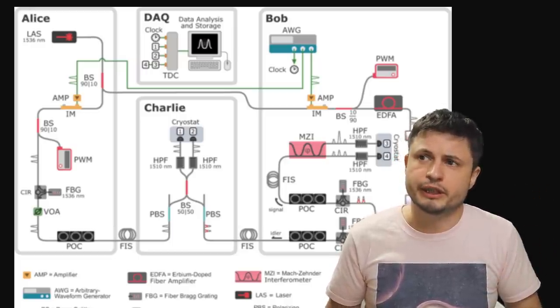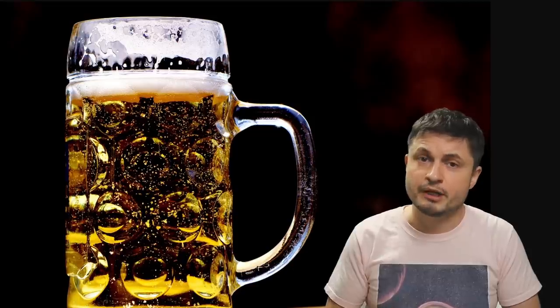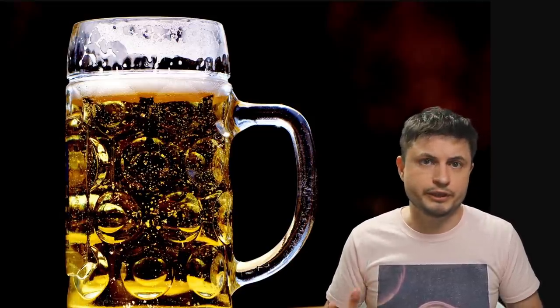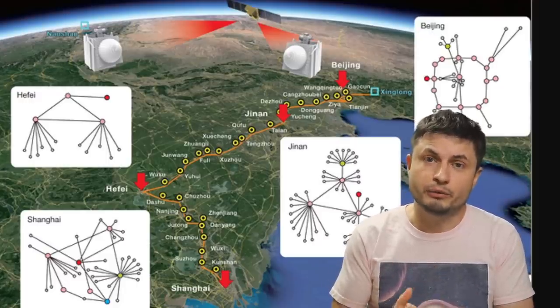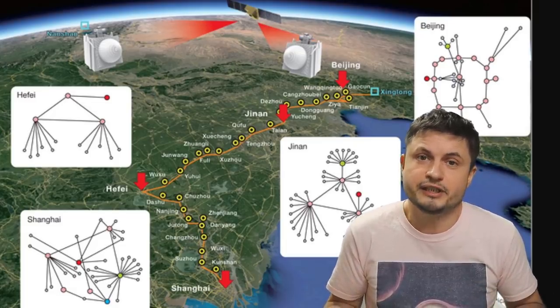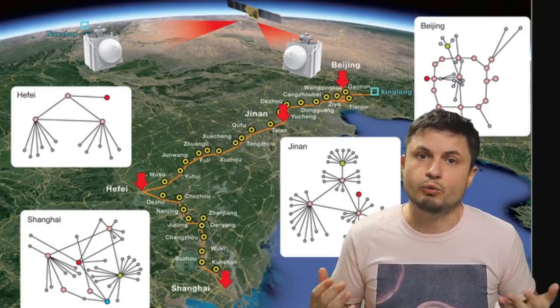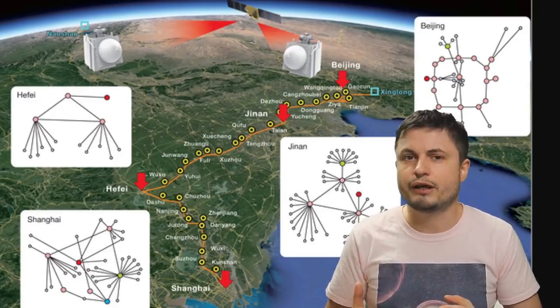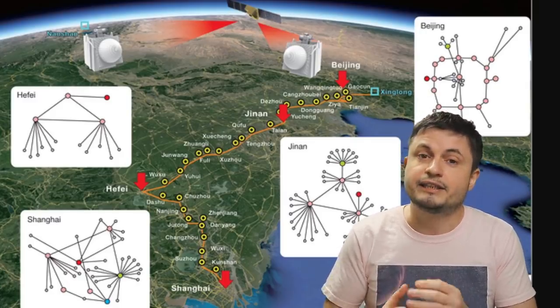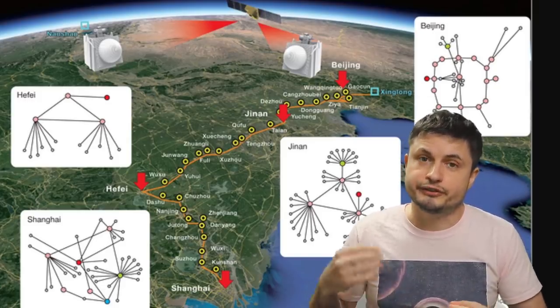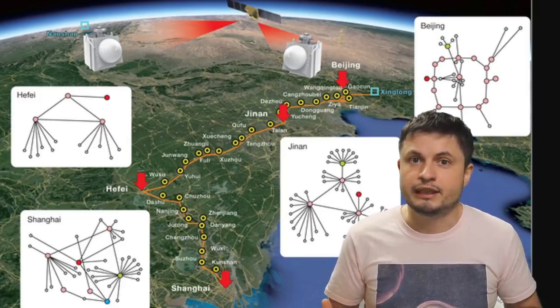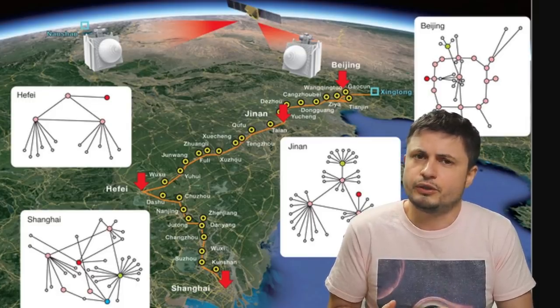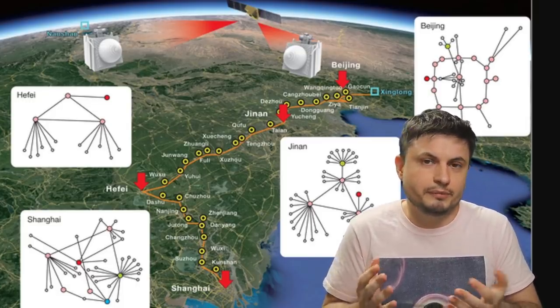And then China went, well, okay, hold my beer Fermilab, because I'm about to do something much crazier. And within only a month, they released a paper suggesting that they basically achieved a network, a quantum network, of roughly around 4,000 or over 4,000 kilometers in length, connecting several major nodes on the way, along with an actual satellite attached to all of this. In other words, they sort of achieved what you could technically call quantum internet.